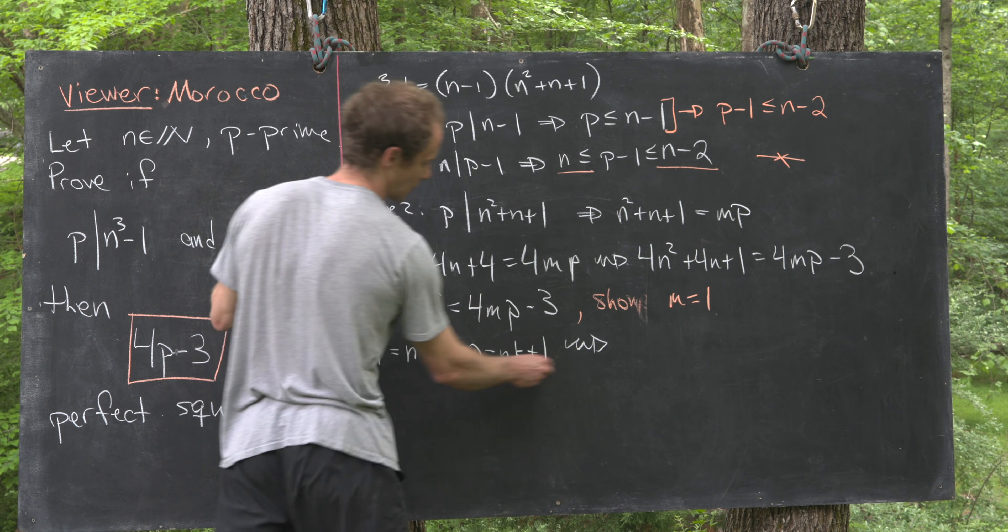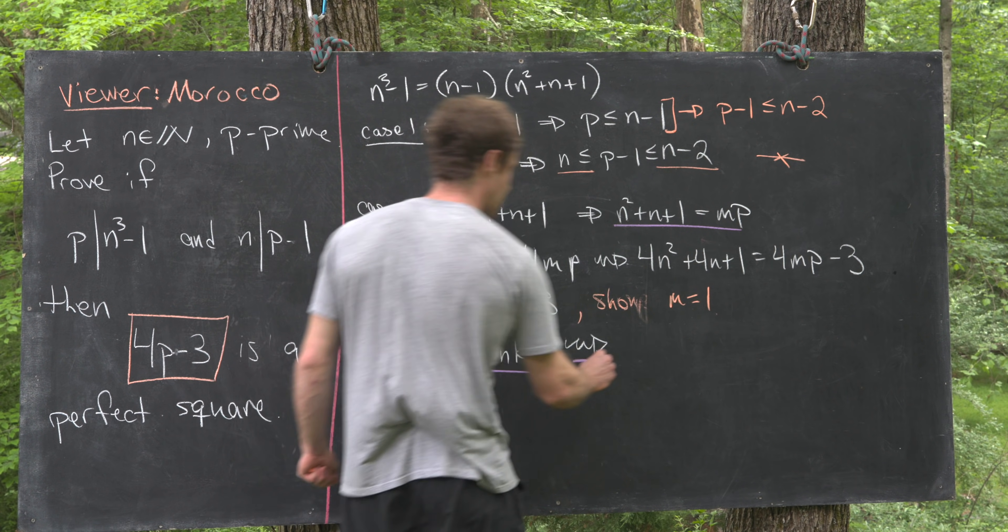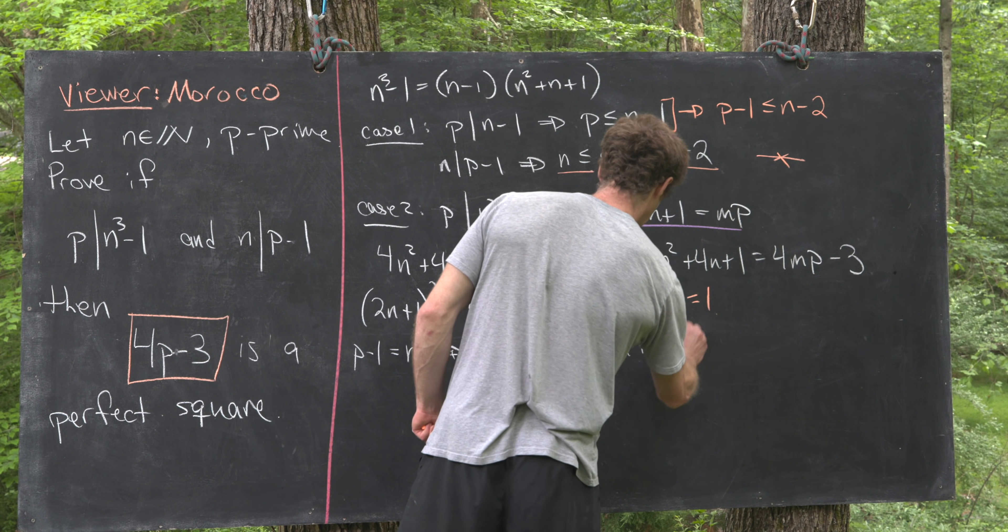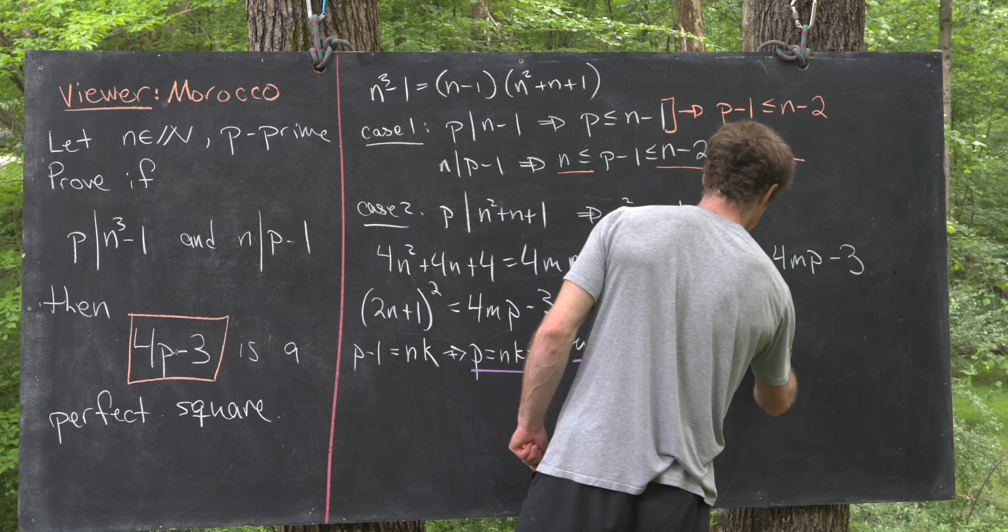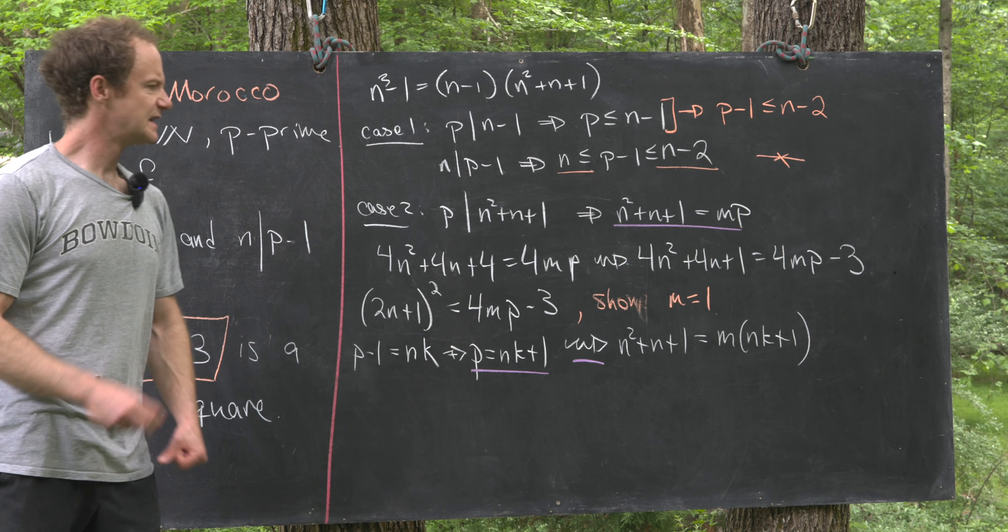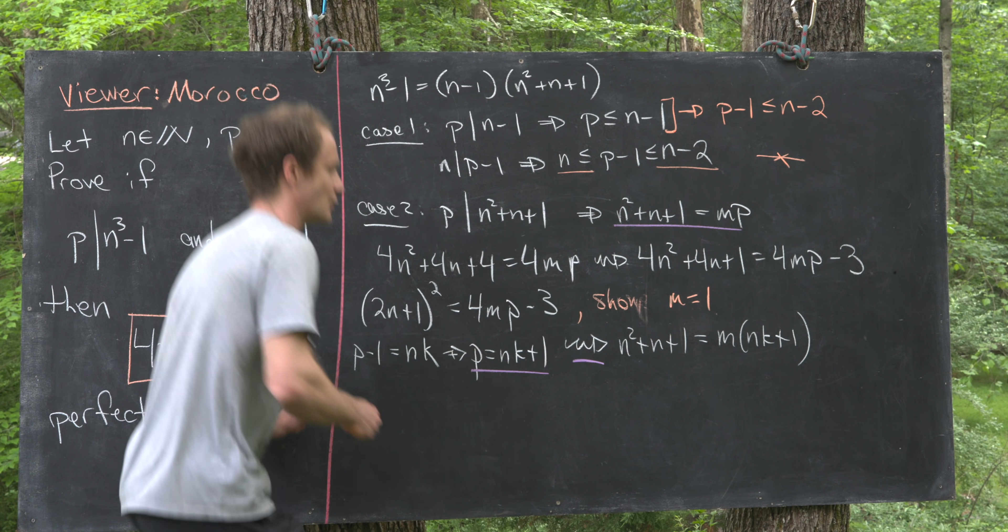So I'll underline each of these in purple to show where this is coming from. So now we have n²+n+1 is equal to m times (nk+1). Now let's rearrange that so that we solve for m and see what we get.